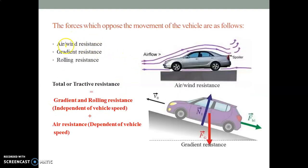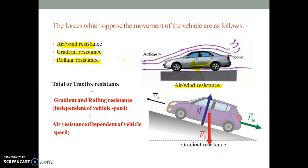Let's discuss what types of resistances affect the motion of an automobile. Generally there are air or wind resistance, gradient resistance, and rolling resistance. These are shown in the diagram. This is the air or wind resistance — you can see how when an automobile is moving in the forward direction, air coming from the opposite direction always tries to strike the body to slow down the speed.